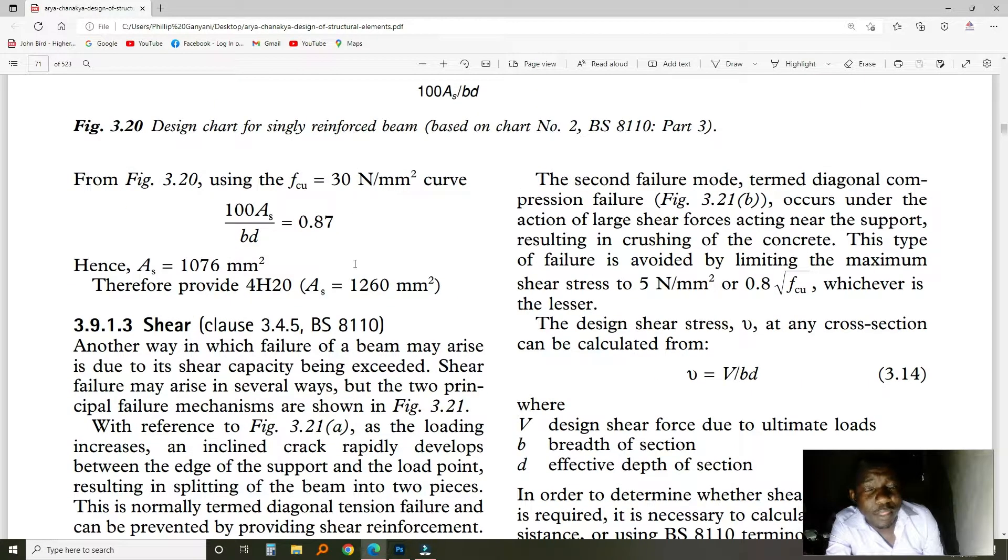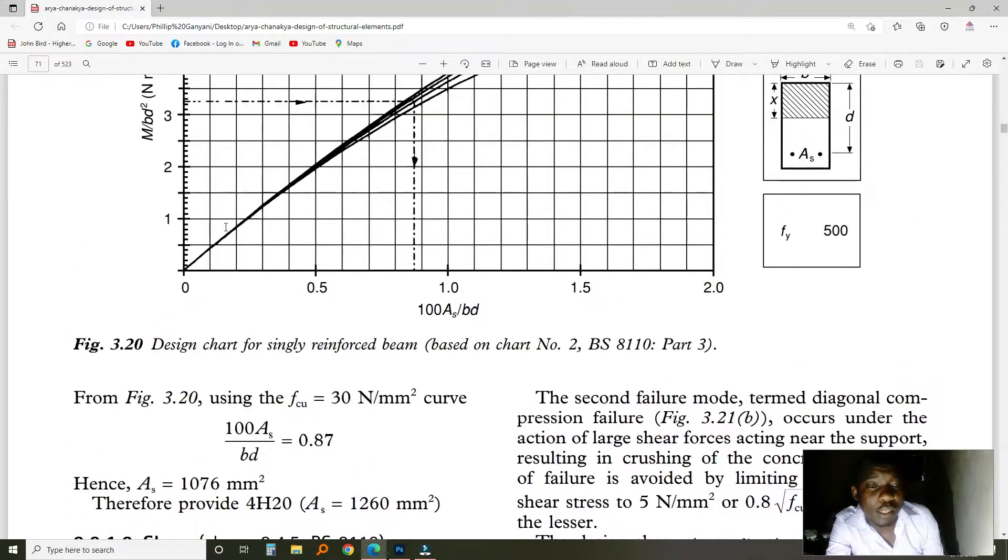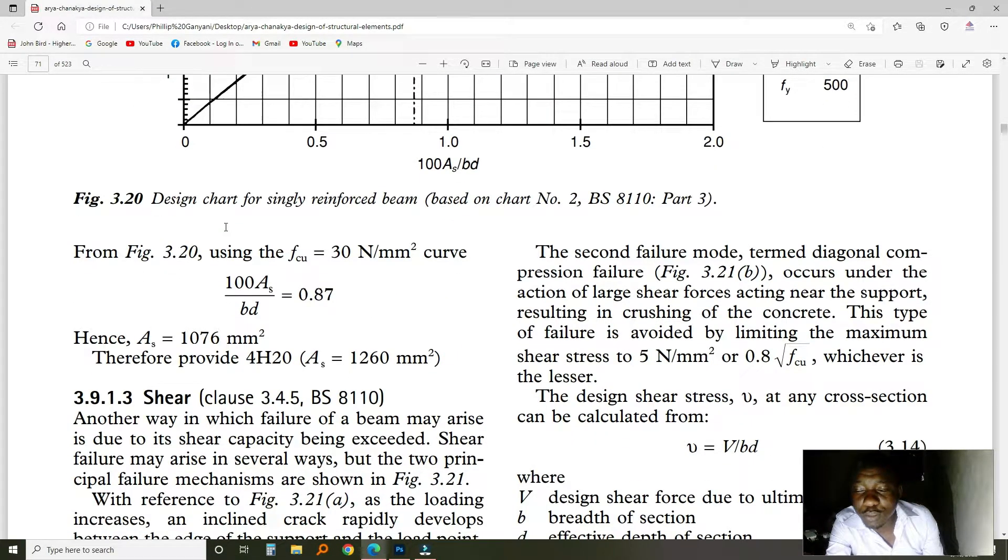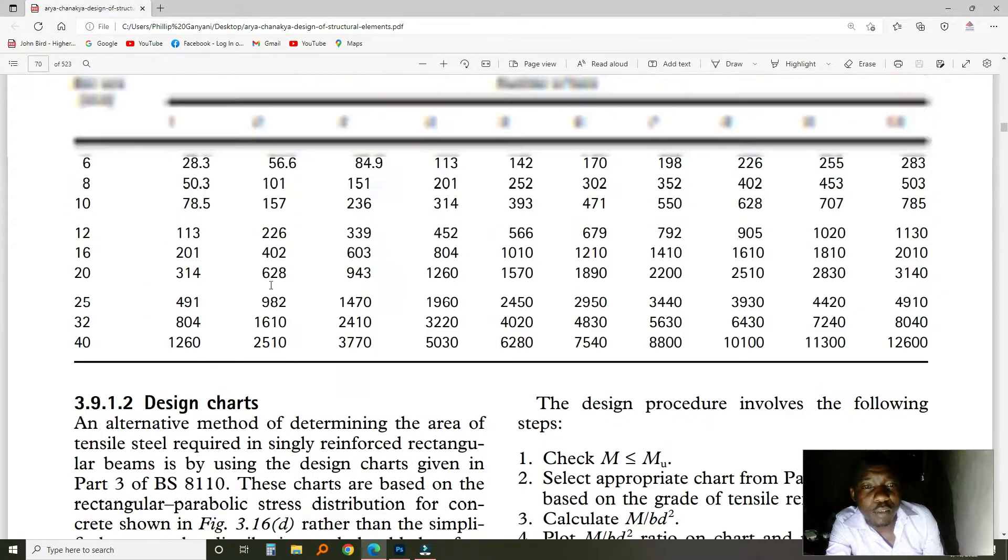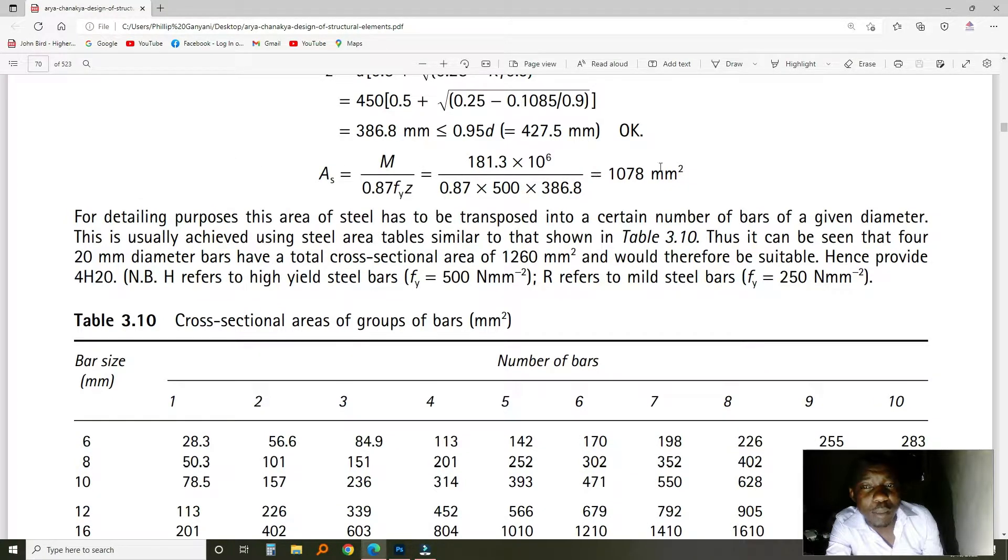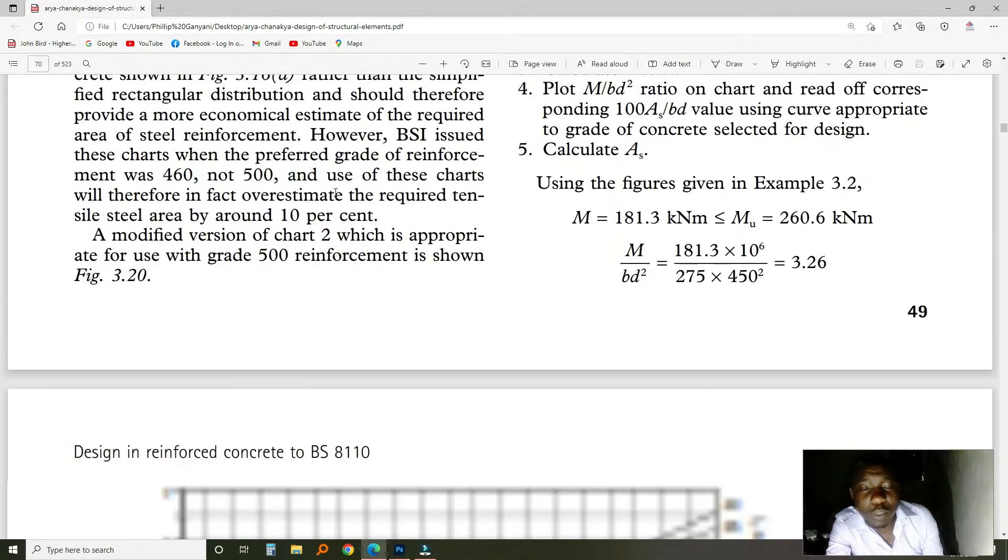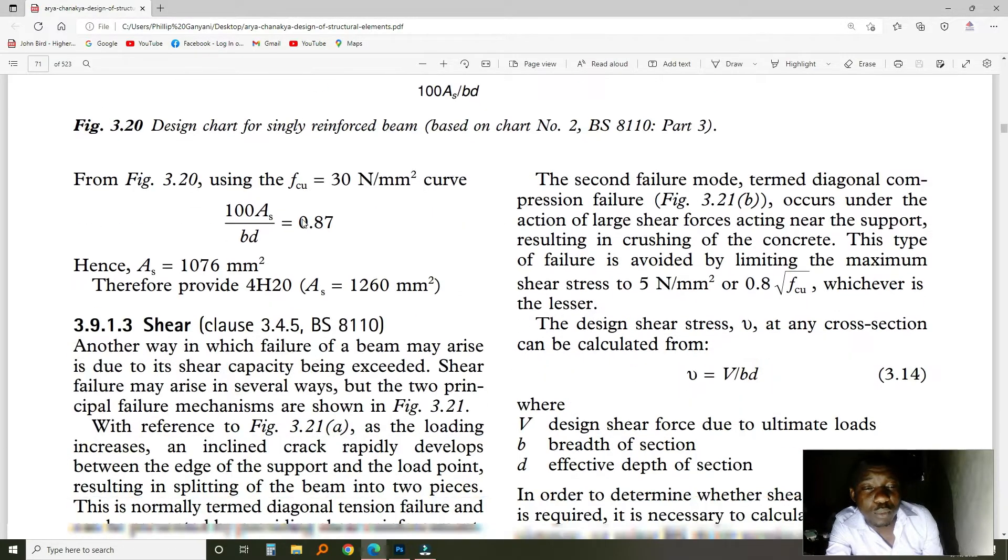Now what happens is when it comes to shear, there is a list of formulas that you need to follow. The first thing is you multiply 100 with the area of steel. So the area of steel that you, if you still remember, we were calculating this, we came up with an area of steel like this one. This area of steel which is As, that is for the bending moment, is also required to calculate the shear force. So what you do is that you multiply it by 100 and you divide it by the breadth and the depth of the beam.